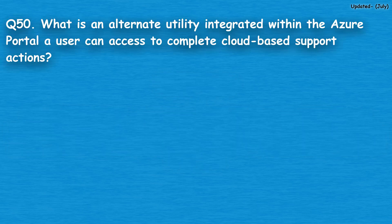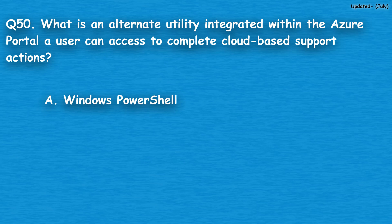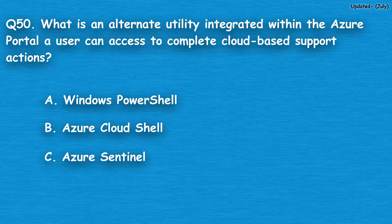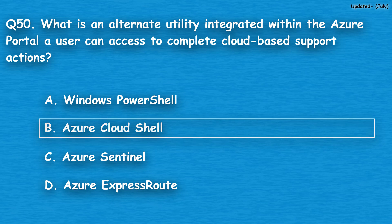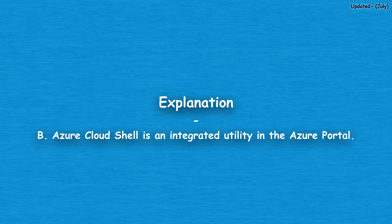Question number 50: What is an alternate utility integrated within the Azure portal a user can access to complete cloud-based support actions? Option A: Windows PowerShell, option B: Azure Cloud Shell, option C: Azure Sentinel, option D: Azure ExpressRoute. The correct answer is option B, Azure Cloud Shell. Azure Cloud Shell is an integrated utility in the Azure portal.